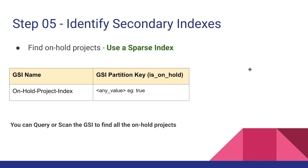That is sparse indexing. Since the index table contains only the on-hold project records and nothing else, we can use either query or scan on this GSI effectively.